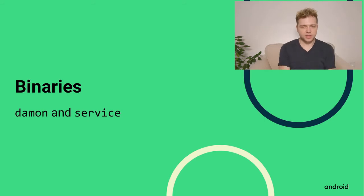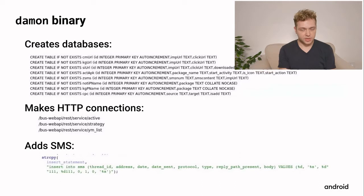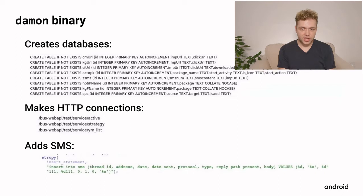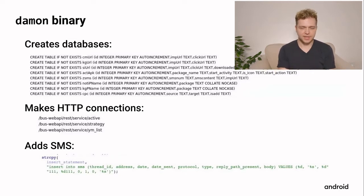There are two binaries: one called 'daemon' (slightly misspelled by the authors) and one called 'service,' each with different functions. The daemon binary creates databases used as configuration for both the other binary and other parts of the system. The tables include URLs, text messages (zsms), and package names. Just from the table contents — fields like 'click URL' and 'imp URL' — you can see there's a clicking component, suggesting adware, click fraud, or some form of ad display.